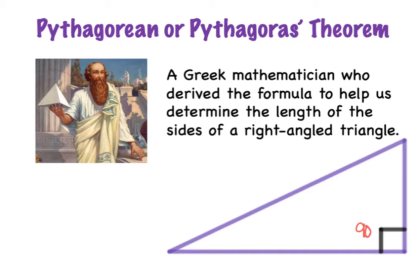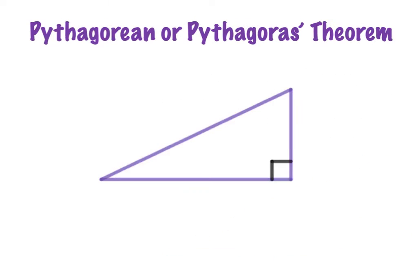So this is a 90-degree angle. His theorem is going to help us figure out how long this side is here, or how long this side here, or here. To use Pythagoras' Theorem, we have to first give the sides of our triangle some names so we can easily identify the parts of the triangle.